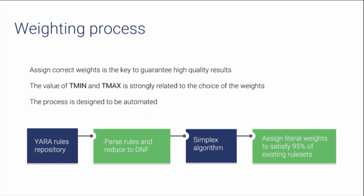The key of the weighting process is to assign good values to the attributes, and those values are tied to the two thresholds T-min and T-max. I wanted the entire process to be automated without relying on the knowledge of expert analysts. One possible solution is to start from a repository of Yara rules. There are many public repositories you can parse and reduce to disjunctive normal form. It then becomes a linear problem solvable by a linear programming algorithm like the simplex algorithm. In the end, you are able to satisfy 95% of your rule set in order to have a weight between the two thresholds.